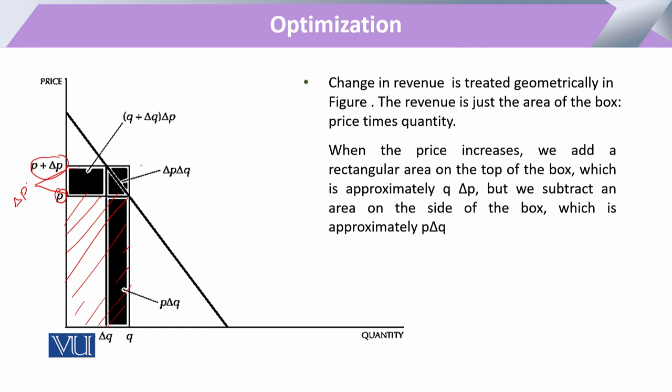This new top area will be added. But at the same time, a component — shown as a black column — is subtracted. This black column is equal to the change in Q multiplied by the original price. This represents the white part that now corresponds to Q plus ΔQ.